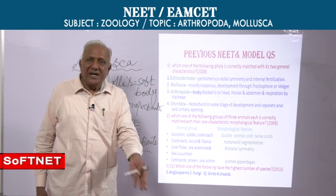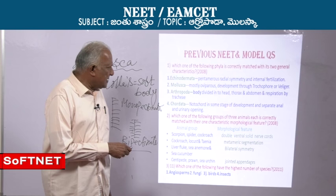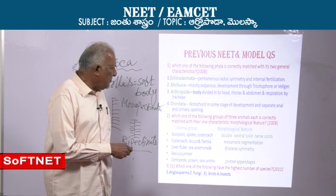Chordata: notochord in some stage of development — correct. Separate anal and urinary opening — not in all; fishes, amphibians, reptiles have a cloaca. Only in mammals do you find separate urogenital apertures.